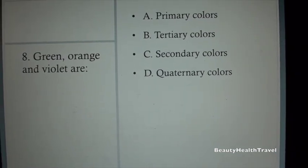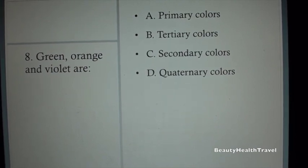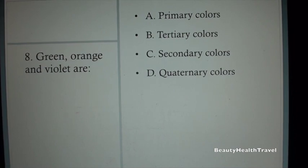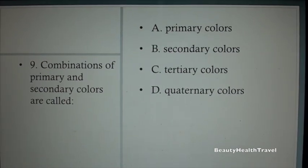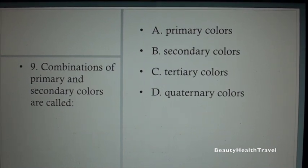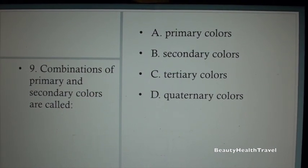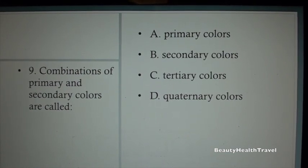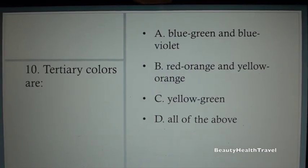Question 8: Green, orange, and violet are: A. Primary colors, B. Tertiary colors, C. Secondary colors, D. Quaternary colors. Question 9: Combinations of primary and secondary colors are called: A. Primary colors, B. Secondary colors, C. Tertiary colors, D. Postmodern colors.